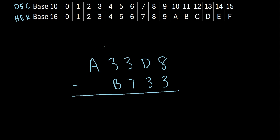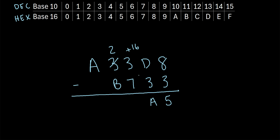Let's try one more example. We have A33D8 minus B733. Starting with 8 minus 3, that's just 5. Then D minus 3 — D is equivalent to 13, so 13 minus 3 is 10. And in the hexadecimal system, A represents 10, so we write A. Next we have 3 minus 7, which we can't do, so we borrow from the next column. This 3 becomes a 2, and we add 16 to this 3. So 3 plus 16 is 19, minus 7, which is 12. And in the hexadecimal system, 12 is represented by C, so we write C.